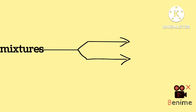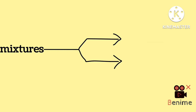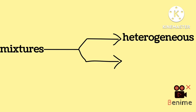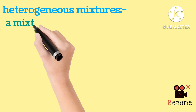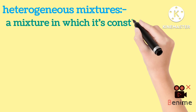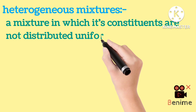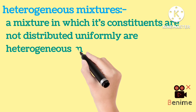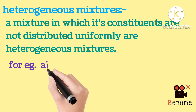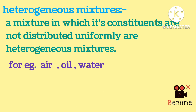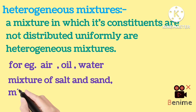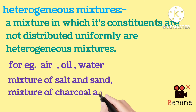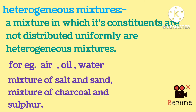Mixtures are also categorized into two parts: heterogeneous mixtures and homogeneous mixtures. A mixture in which its constituents are not distributed uniformly is called a heterogeneous mixture. For example, air, oil and water, mixture of salt and sand, mixture of charcoal and sulphur, etc.